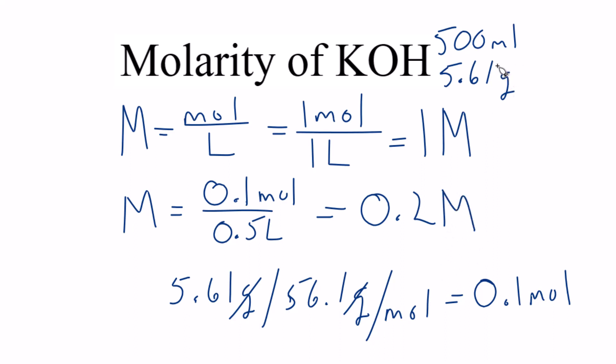So if you're given grams, you need to divide by the molar mass to get moles, so you can put that in your equation. That's it. That's how you find the molarity of KOH, potassium hydroxide.